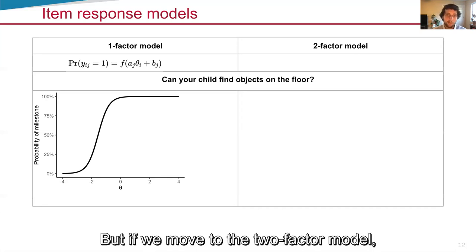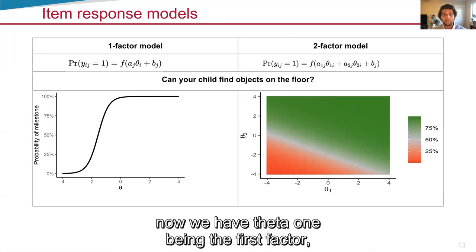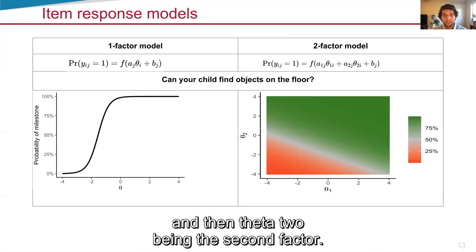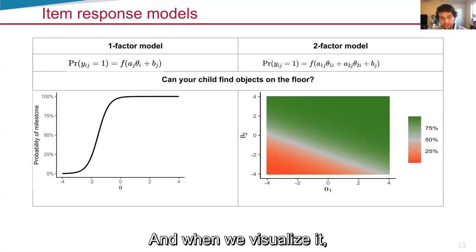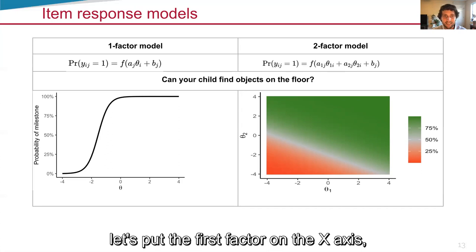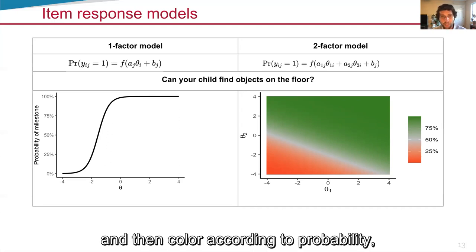But if we move to the two-factor model, now we have theta one being the first factor and then theta two being the second factor. And when we visualize it, let's put the first factor on the x-axis, the second factor on the y-axis, and then color according to probability.